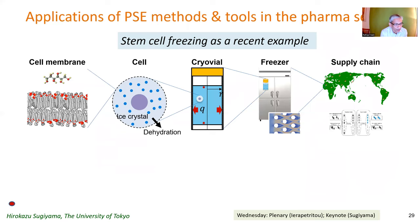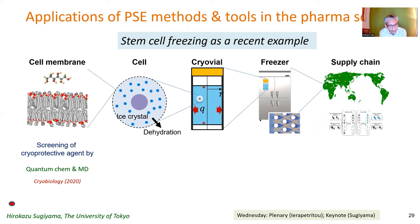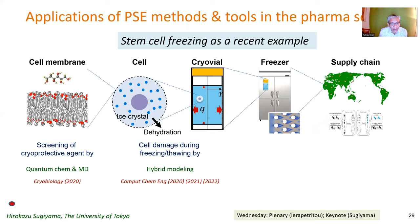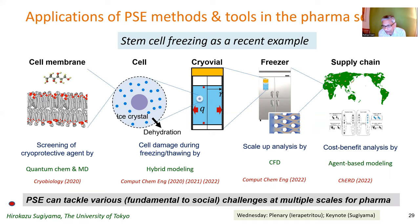Work from the University of Tokyo by Hirokazu Sugiyama's group demonstrates PSE applied to stem cell processing across multiple scales: quantum chemistry and molecular dynamics at the smallest scale, hybrid modeling for cell damage during freezing and thawing, CFD tools for scale-up analysis, and agent-based modeling for cost-benefit analysis. This shows that PSE can tackle various challenges at multiple scales for pharmaceutical applications.